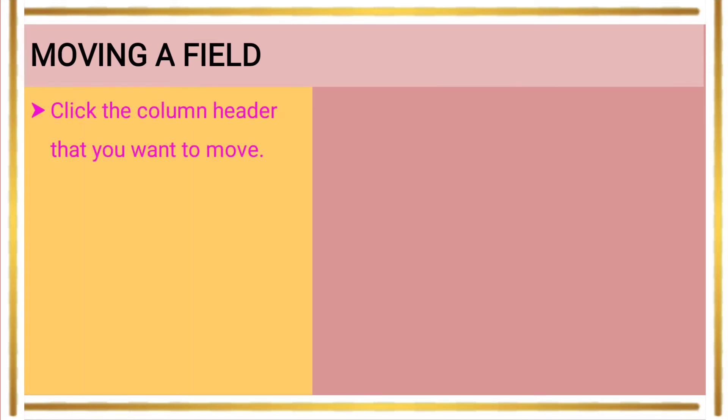At the same time, we will look at hiding and unhiding a field — making a field visible or invisible. In the table, you can show or hide a field: in the table's records the field can be visible or invisible. Now, for moving a field, click the column header that you want to move.